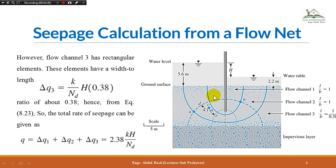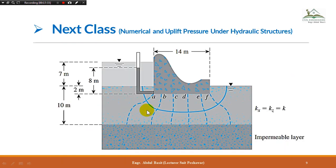The total discharge through all three channels is Δq1 + Δq2 + Δq3 = 2·k·h/Nd + 0.38·k·h/Nd = 2.38·k·h/Nd. This is the approach when flow channels have elements of different shapes — you calculate the discharge for each channel separately using its specific b/l ratio, then sum them.